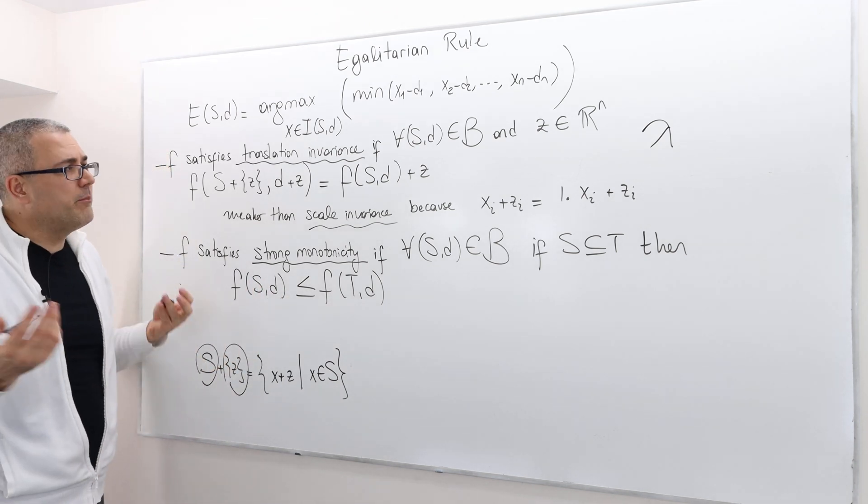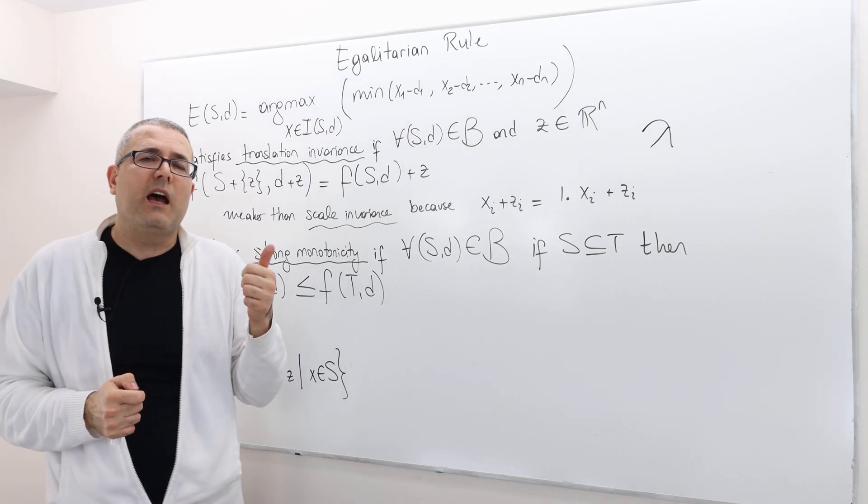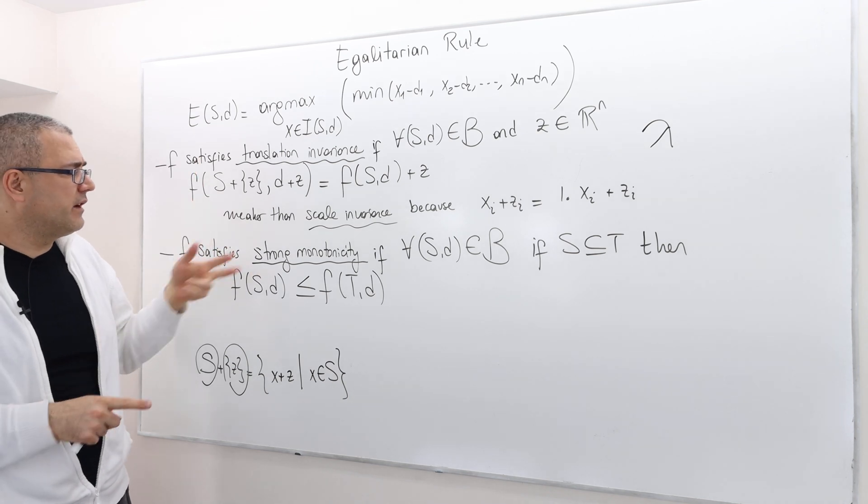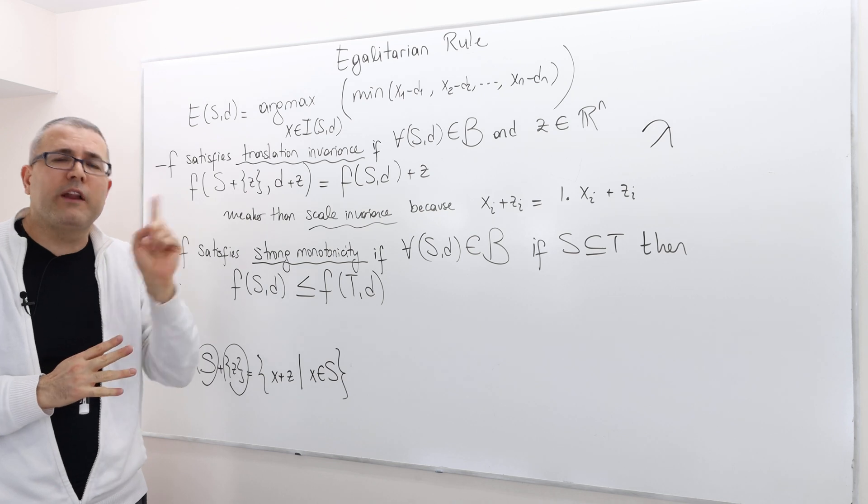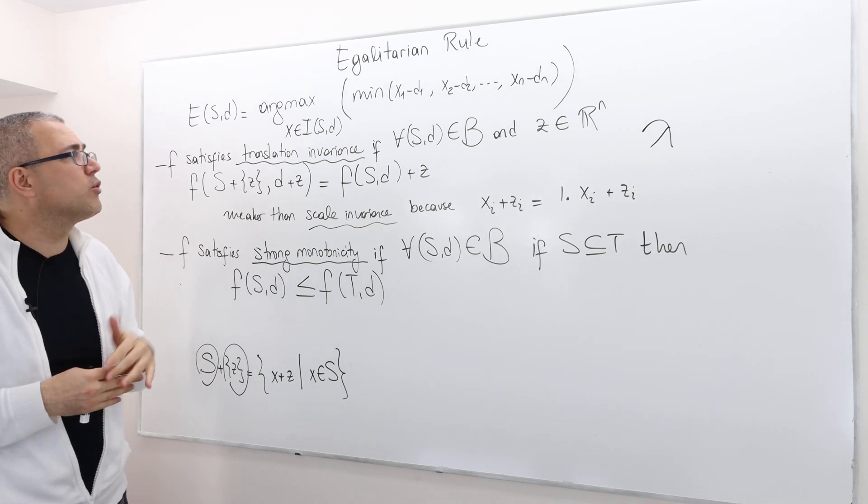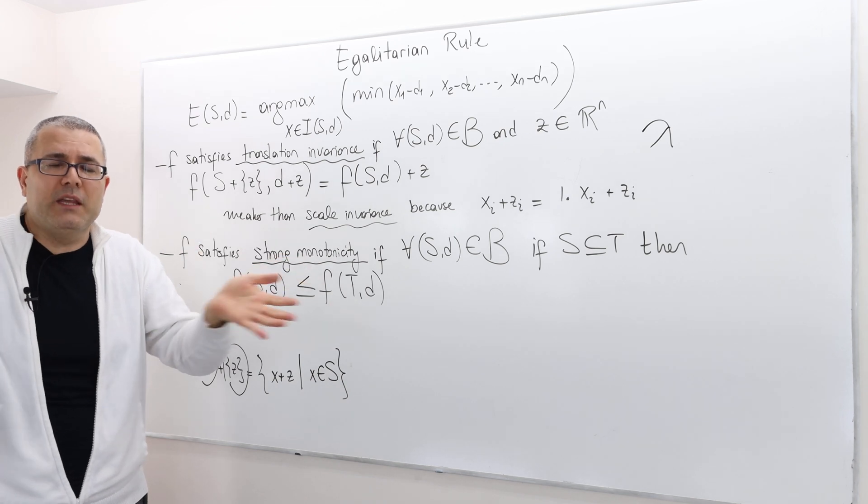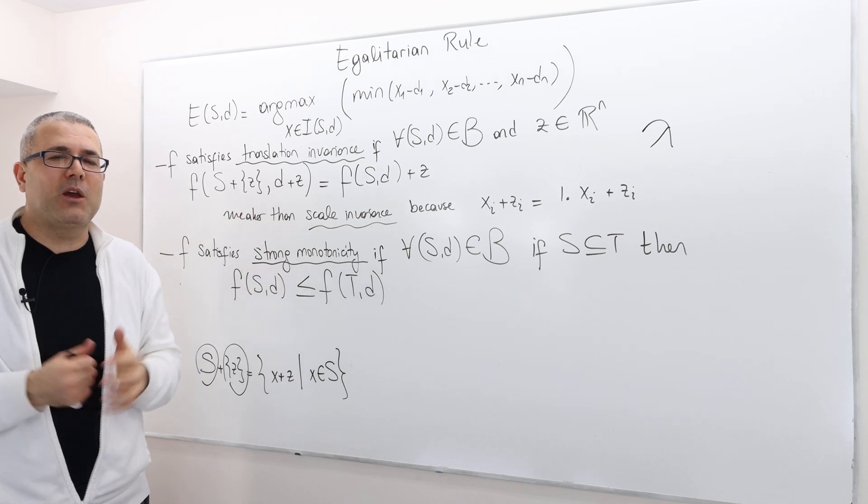So Kalai's theorem basically says: if you retain weak Pareto optimality and symmetry, and then add these two axioms—translation invariance and strong monotonicity—then you are going to have one and only one bargaining rule, which is the egalitarian rule, which means you should be distributing the surplus to agents equally.